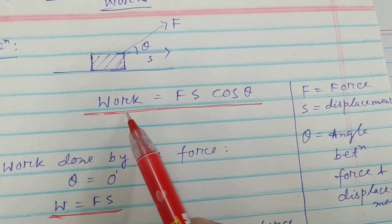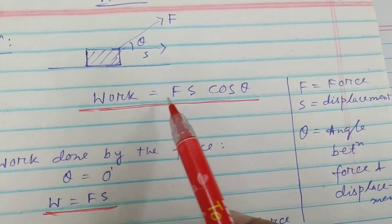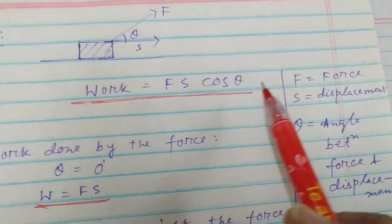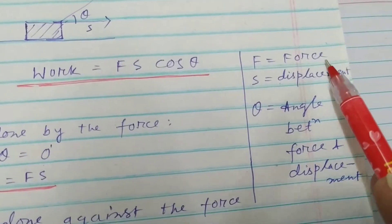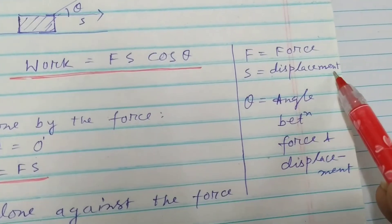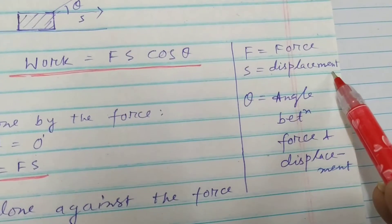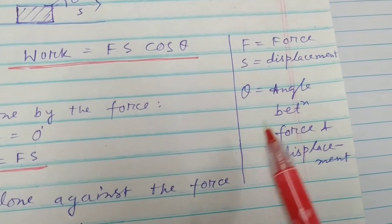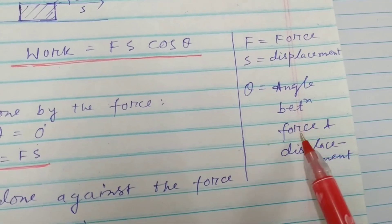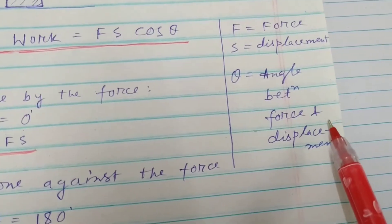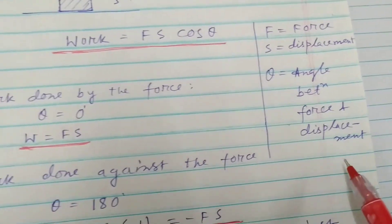The expression is: Work W is equal to Fs cos theta, where F is the force, s is the magnitude of the displacement, and theta is the angle between the force and the displacement.